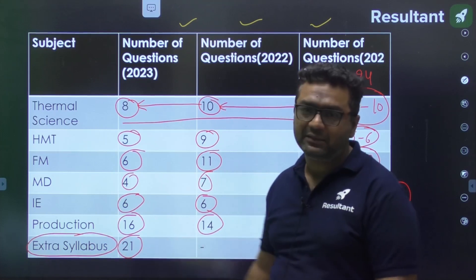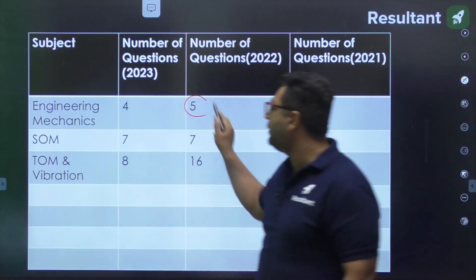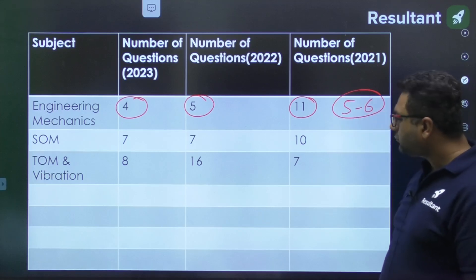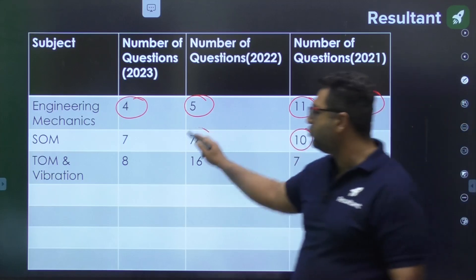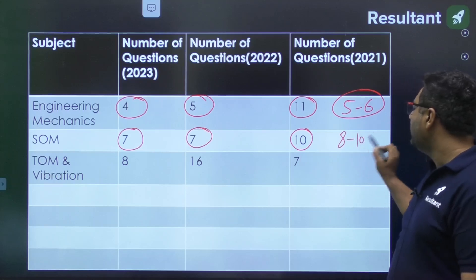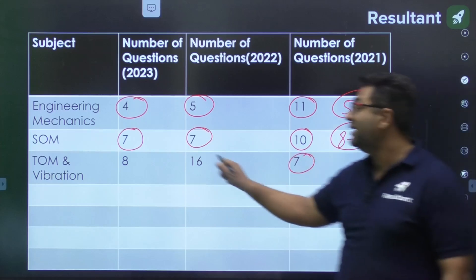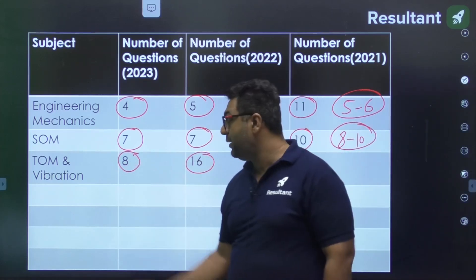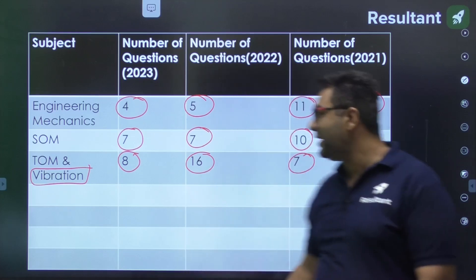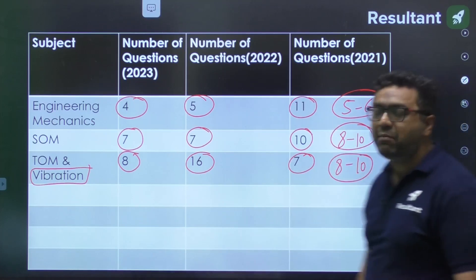Engineering Mechanics was 11 in 2021, then 5, then 4. You can expect 5 to 6. For Strength of Material, it was 10, then 7, then 7. I suggest it may go up to 8 to 10, it should increase because SOM is a fundamental subject. For Theory of Machines and Vibration, it was 7, then 16, then 8. Major questions were from vibrations, very few from theory of machines. Here also I'm expecting somewhere 8 to 10.